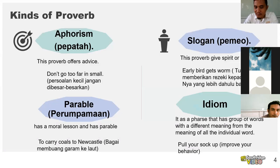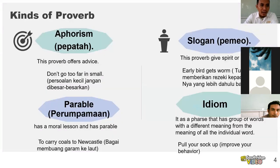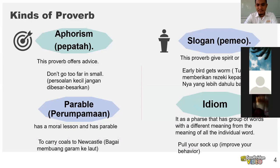So that is what we call a proverb: a collection of wise sayings that offer advice about how to live your life. Do you have any questions? No? Good. So now let's look at the kinds of proverbs — how many kinds do we have? The first kind is an aphorism, or 'pepatah' in Bahasa Indonesia, which offers advice.